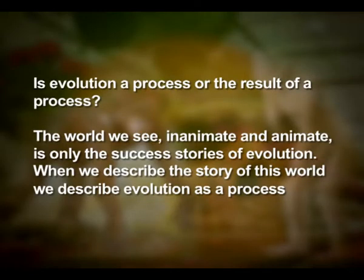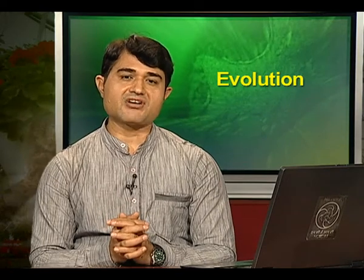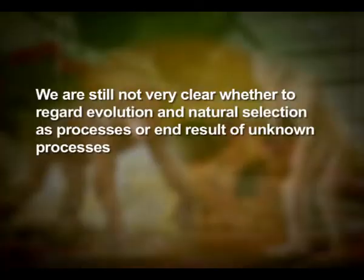Nobody believes this conjecture anymore. Is evolution a process or the result of a process? The world we see — inanimate and animate — is only the success stories of evolution. When we describe the story of this world, we describe evolution as a process. On the other hand, when we describe the story of life on earth, we treat evolution as a consequence of a process called natural selection. We are still not very clear whether to regard evolution and natural selection as a process or the end result of unknown processes.